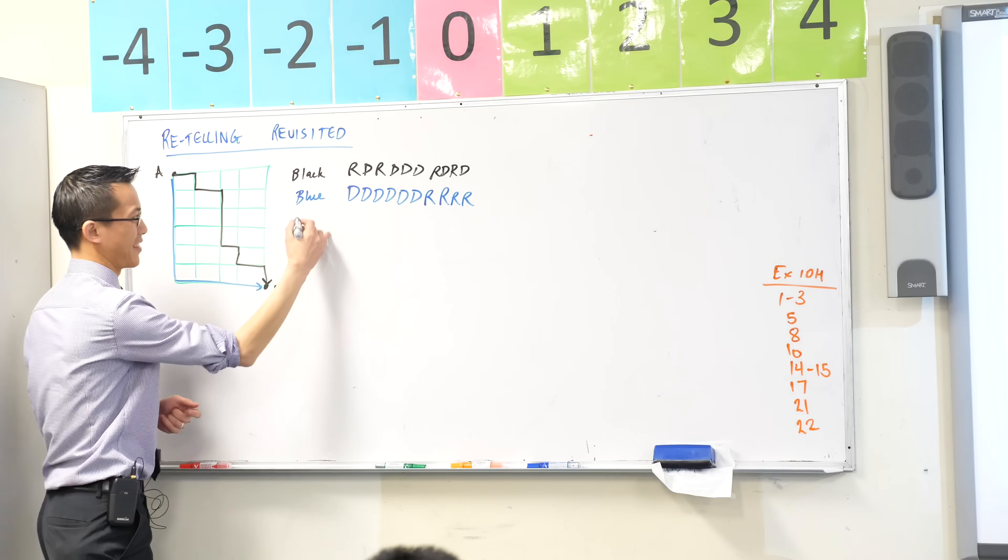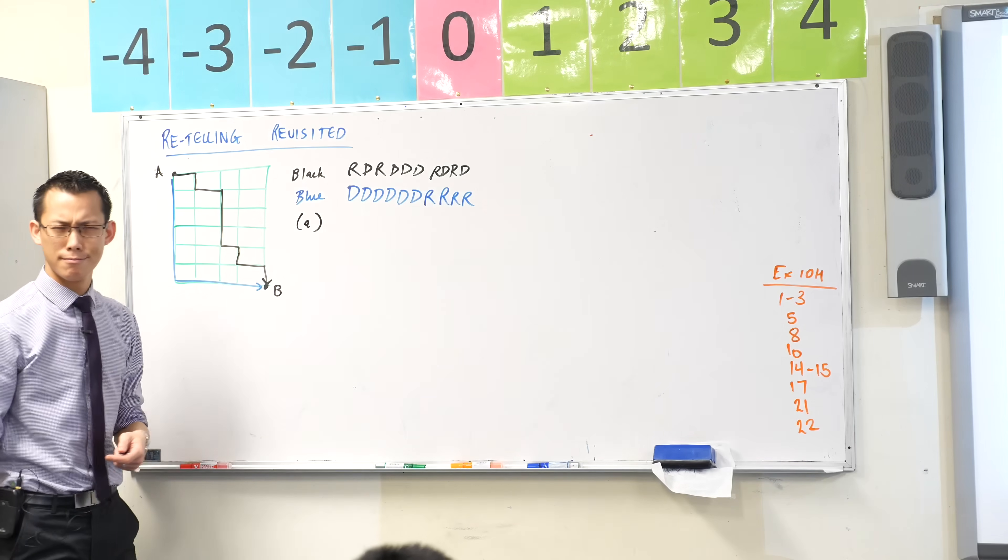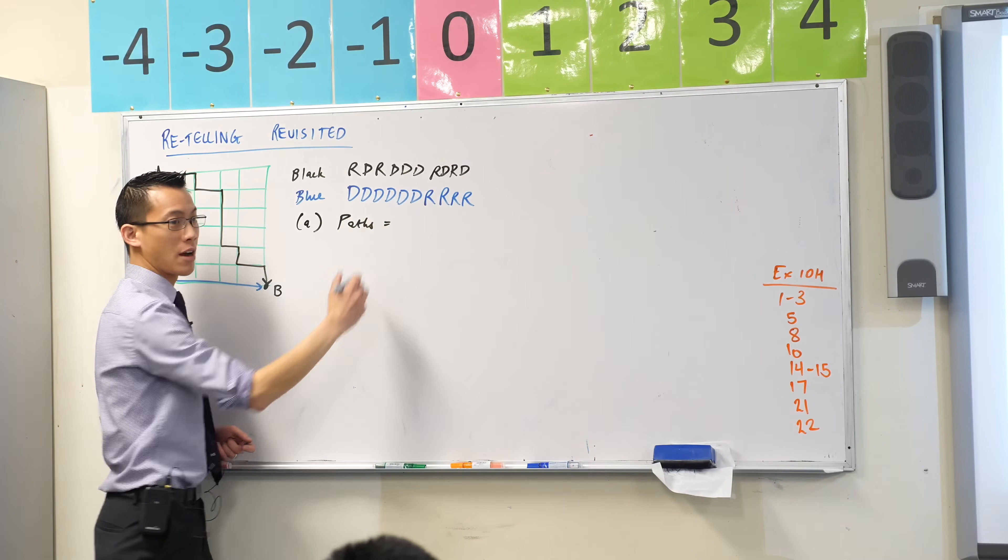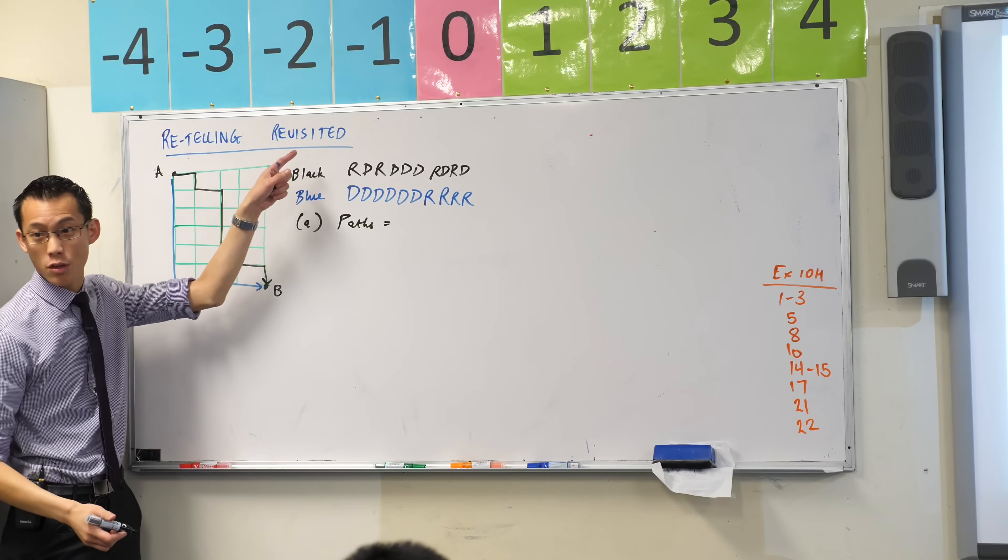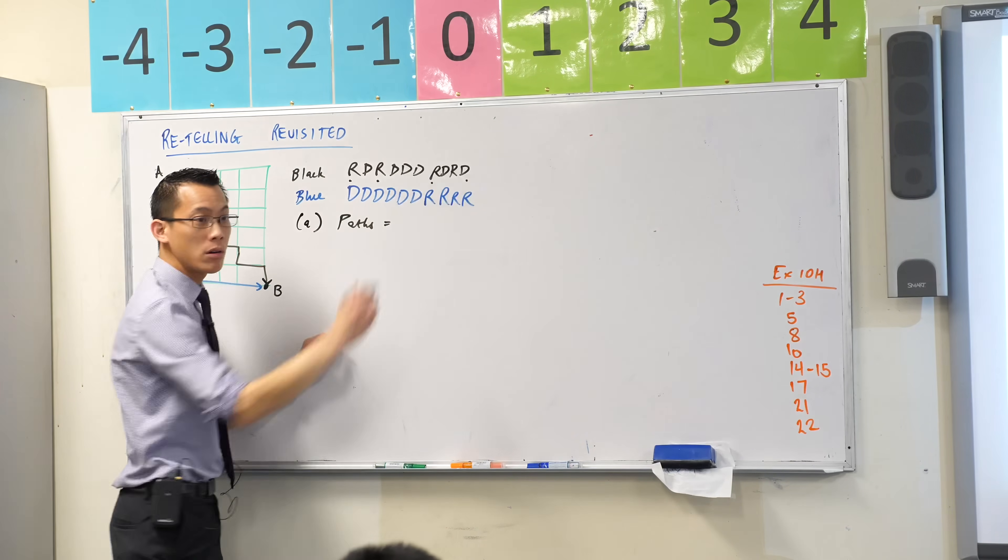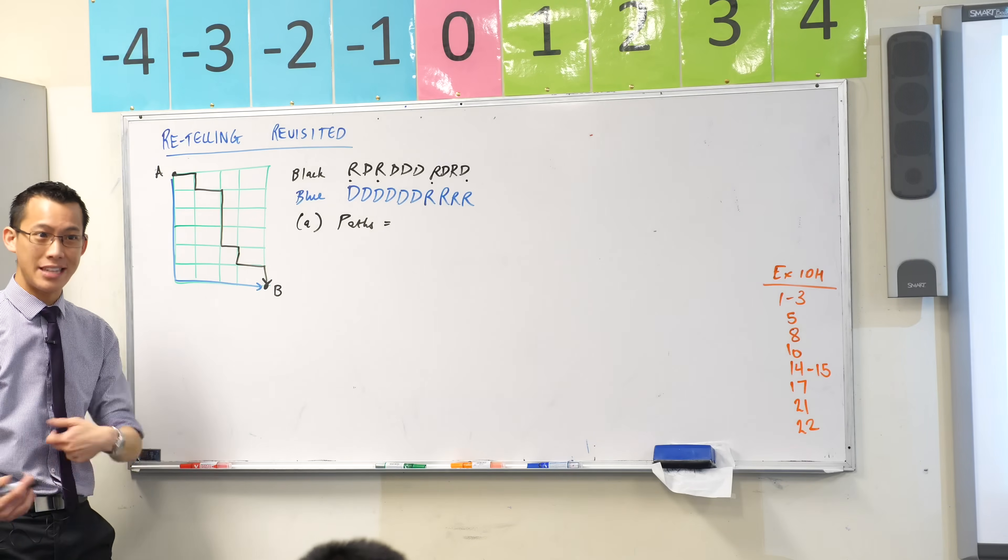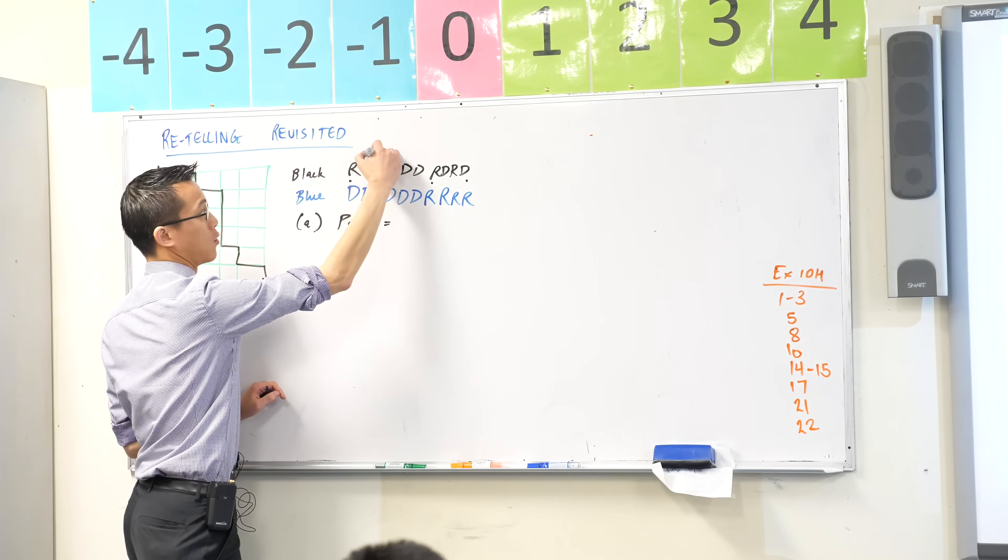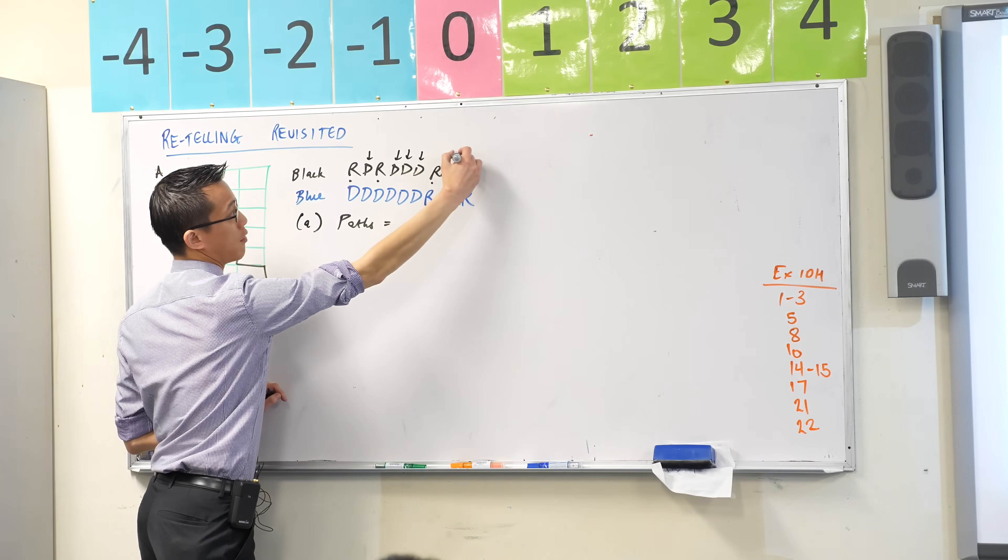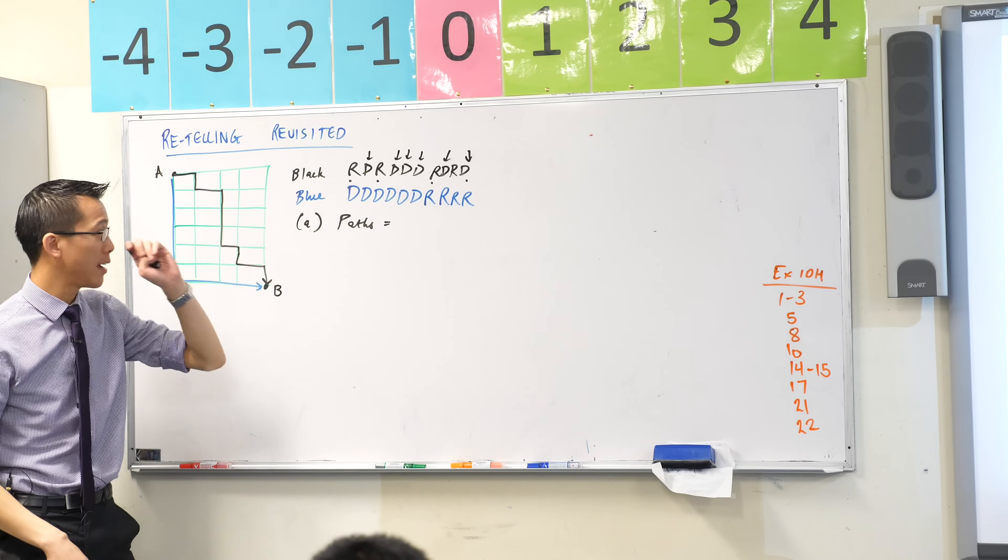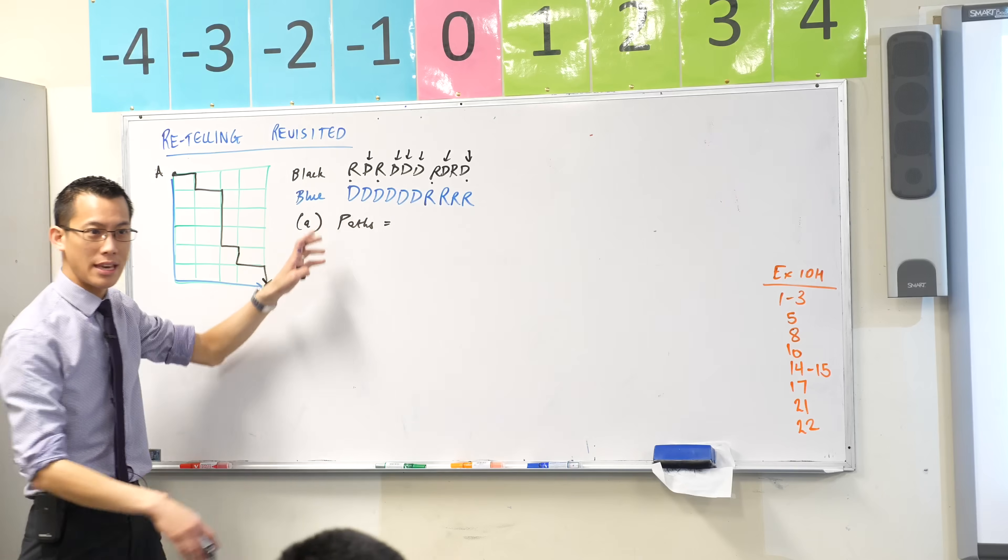Count them up. The number of steps you've got to go is you've always got to go four to the right at some point. Have a look at them: one, two, three, four. And you always have to go down how many times? Six times: one, two, three, four, five, six. It doesn't matter where you do them, but you've got to do them eventually. So you've got six of those, four of these. How many in total are you doing?